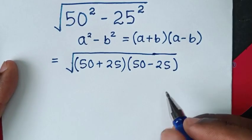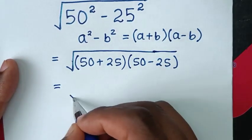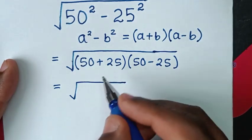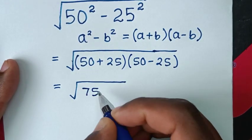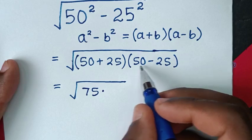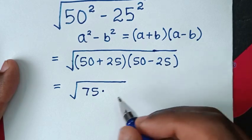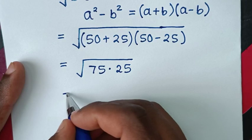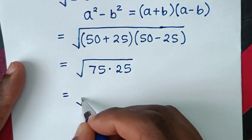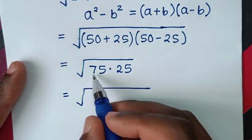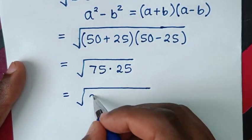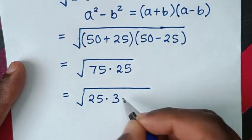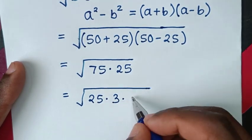In the next step, it will be equal to the square root of 50 plus 25, which is 75, times 50 minus 25, which is 25. Then it will be equal to the square root of 75 times 25. And 75 is the same as 25 times 3.